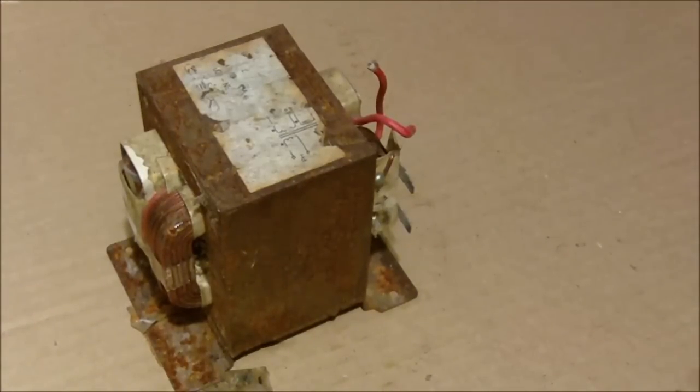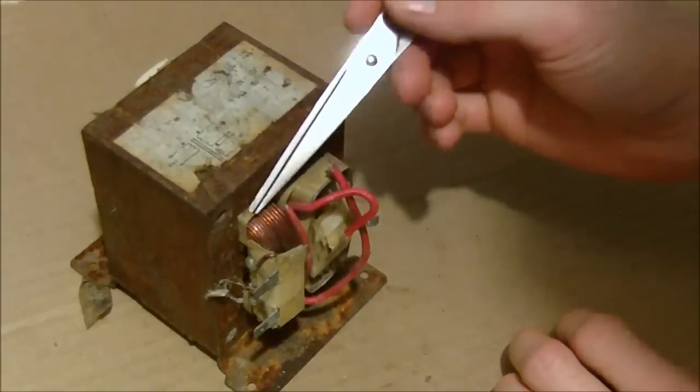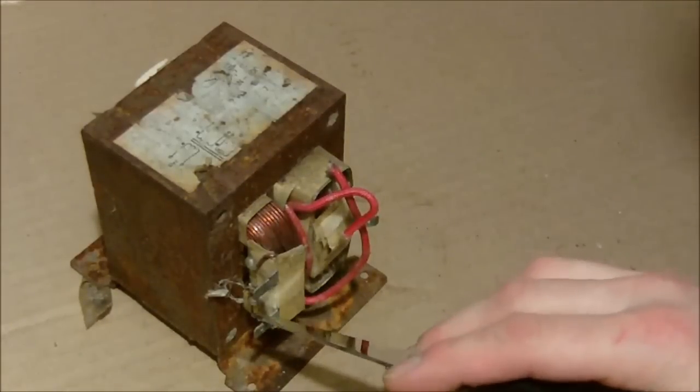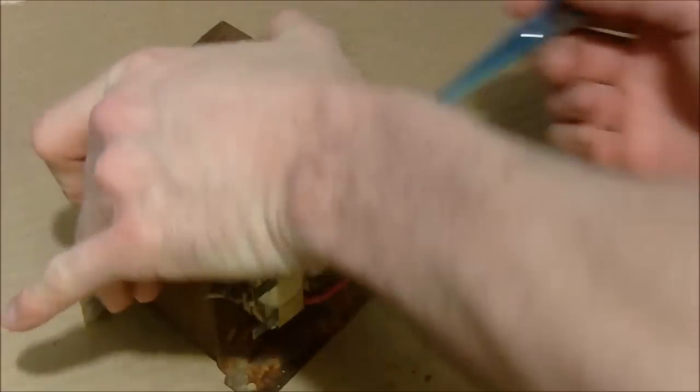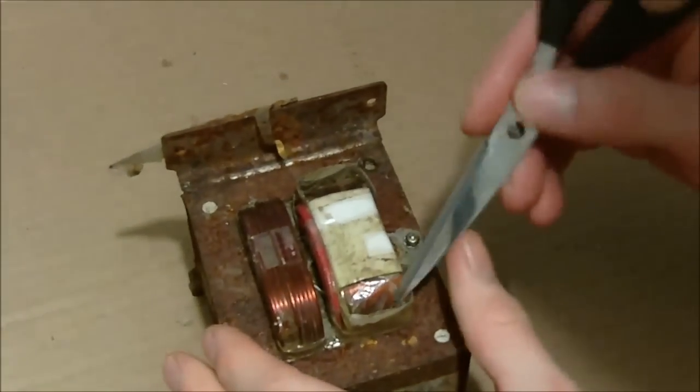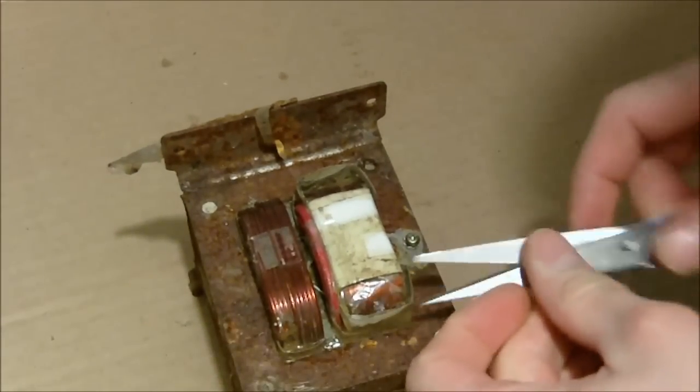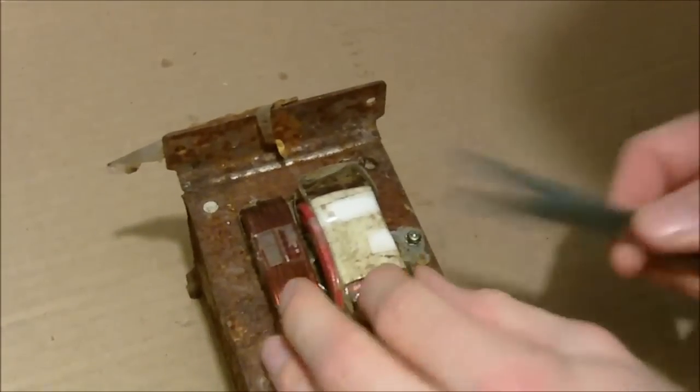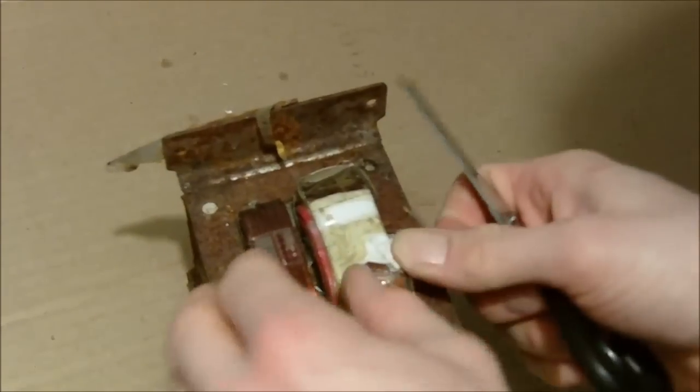Right now, the transformer, this is the primary coil where the 120 volts goes in, and this is the secondary coil. The secondary coil has a lot more thin windings. If you look at the windings, you can see that there's a lot of little thin windings in there.